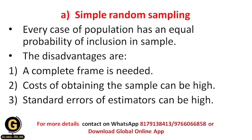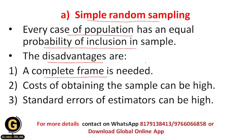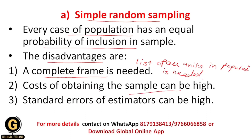There are different types of probability sampling. The first type is simple random sampling, where every case of the population has an equal probability of inclusion in the sample. The disadvantages are: a complete frame is needed, meaning a list of all units in the whole population is required; the cost of obtaining the sample can be high — for example, if doing personal interviews where people are distributed over wide geographical areas; and the standard errors of estimators can be high.